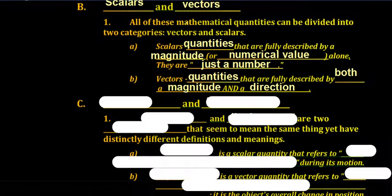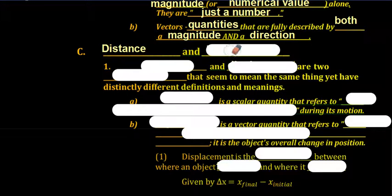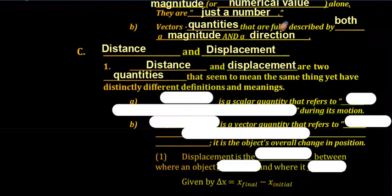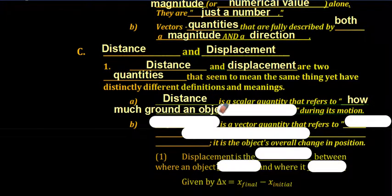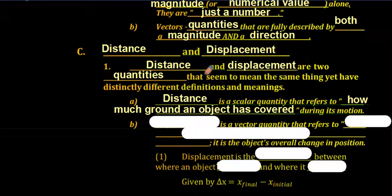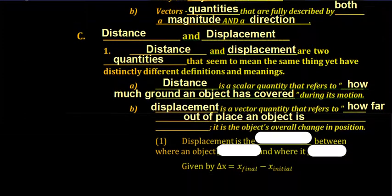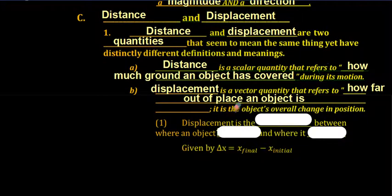The first scalar and vector pair we are going to deal with are distance and displacement — these two are closely related. However, they have distinctly different definitions and meanings. Distance is a scalar quantity that refers to how much ground an object has covered during its motion, where displacement is a vector quantity that refers to how far out of place an object is — it is the object's overall change in position.